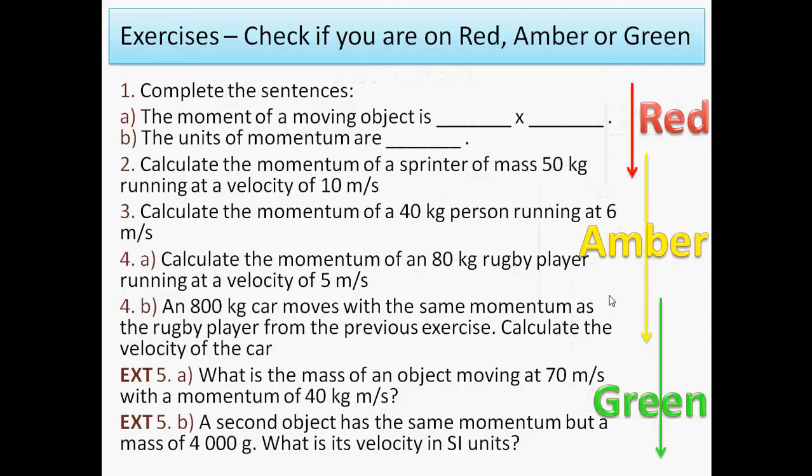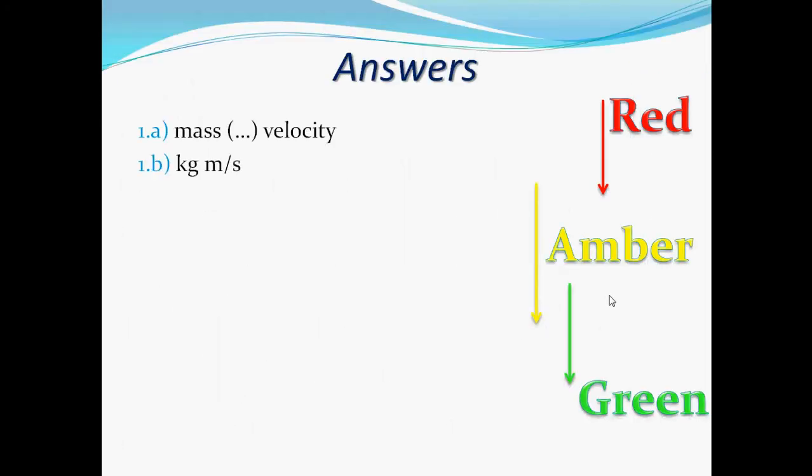Calculate the momentum of a 40 kilogram person running at 6 meters per second. Again, momentum equals mass times velocity, so 40 times 6, that gives you 240 kilograms meters per second.